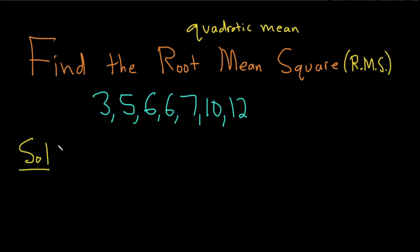Solution. So the RMS is given by the following formula. It's basically the square root of, and you basically take all of your data and you square it and you add it up, then you just divide by the total number of data. So pretty simple.